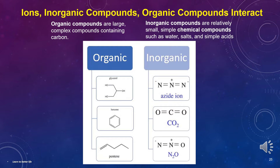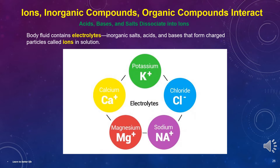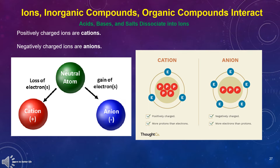You don't need to learn the detail of these — we will leave that to the biochemist. Body fluid contains electrolytes, inorganic salts, acids, and bases that form charged particles called ions in solution. Positively charged ions are called cations, and negatively charged ions are anions.